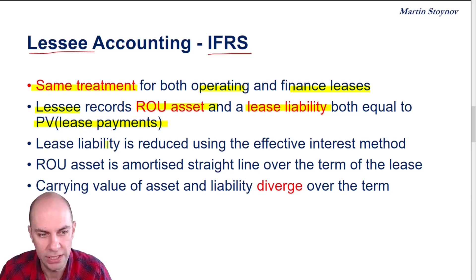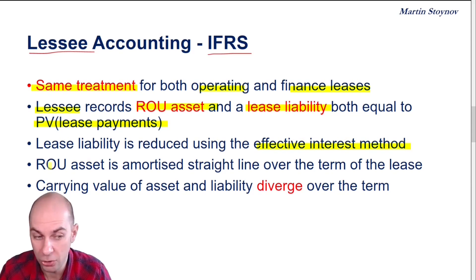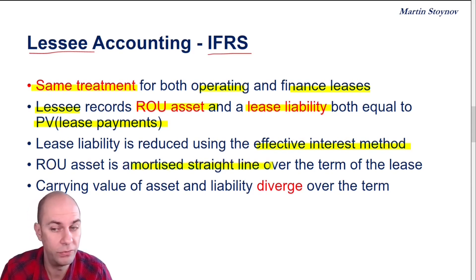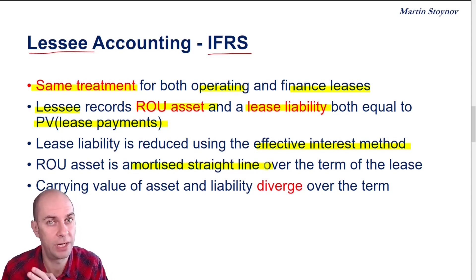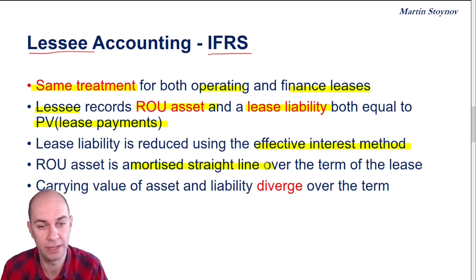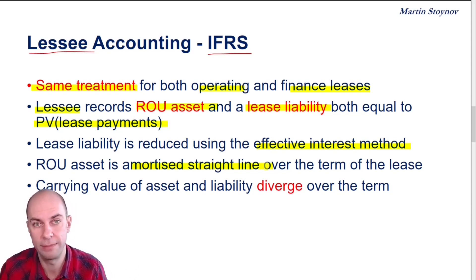The lease liability is reduced using the effective interest rate method. The ROU asset, however, is amortized straight line over the term of the lease. So the effective interest rate method is not a straight line method, but the ROU asset is amortized straight line.